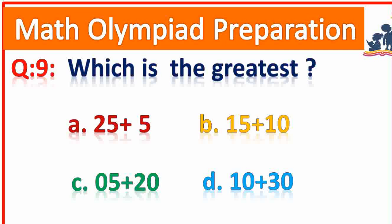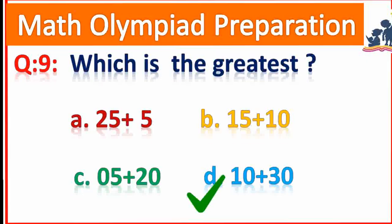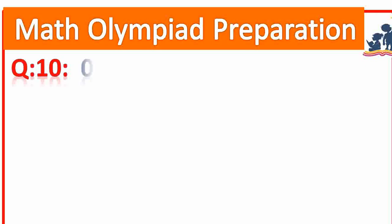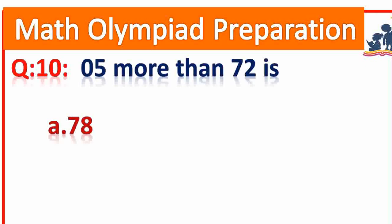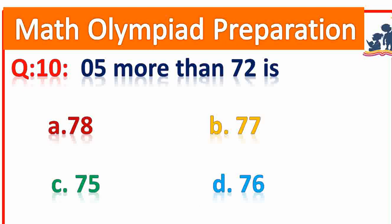Question number 10. 10 plus 30 is 40. Very good. Question number 10: 5 more than 72 is? 77. Very good.